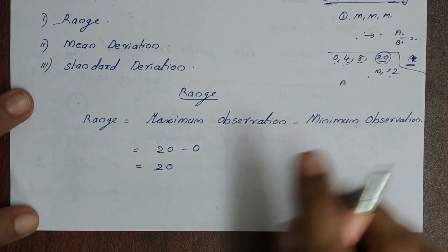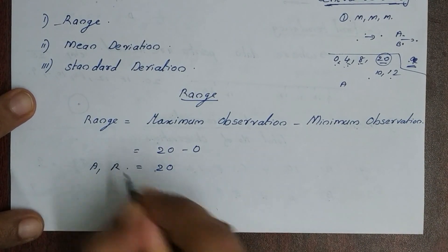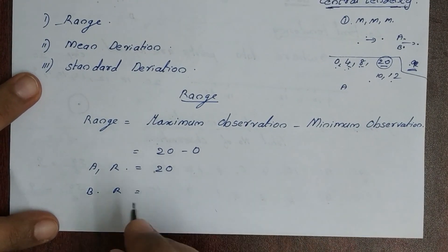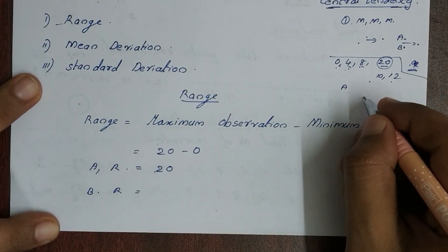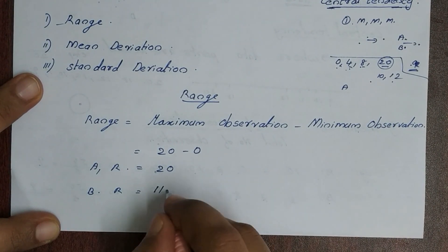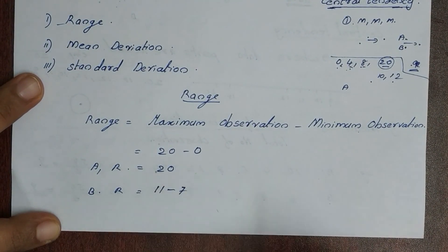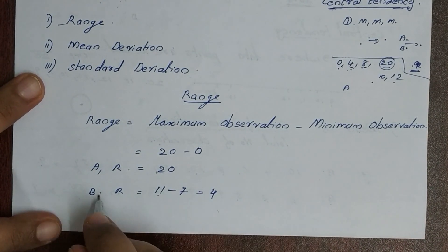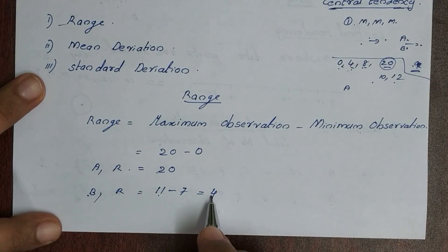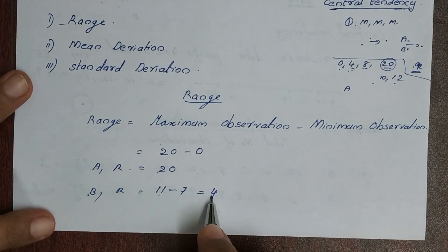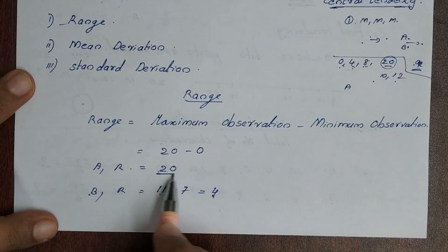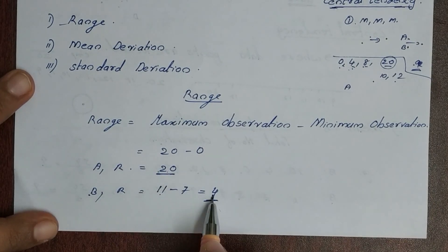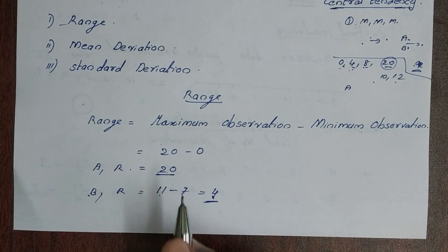For Student B, the maximum is 11 and minimum is 7. So range of B is 11 minus 7, which equals 4. Student A has a range of 8 and Student B has a range of 4, so there is a good difference. This is a good method, but it has a limitation.